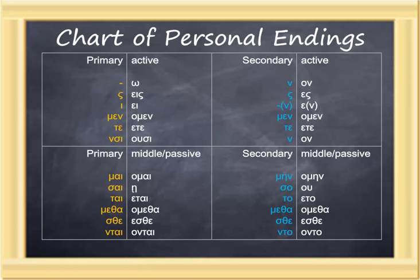These endings go to the right side of the verb and identify subject, number, and voice. The primary actives are: nothing, sigma, iota, men, te, nsi. The primary middle passives are: mai, sai, tai, metha, sthe, ntai.